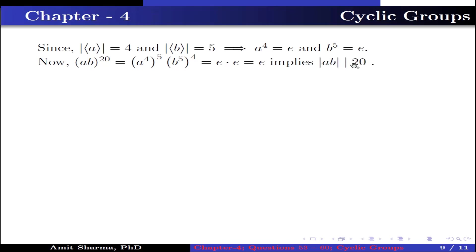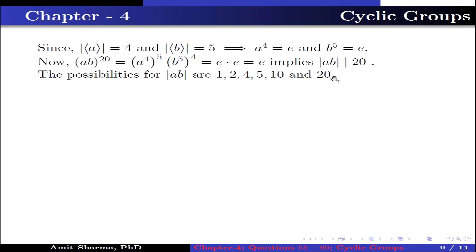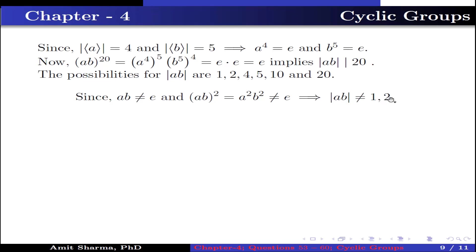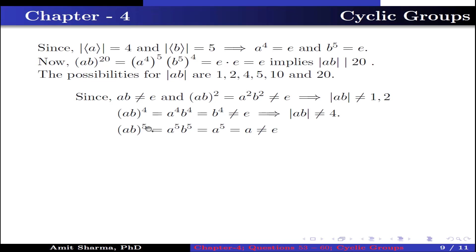This implies the order of AB divides 20. The possibilities for the order of AB are 1, 2, 4, 5, 10, and 20. Since AB ≠ identity and (AB)² = A²B² ≠ identity, the order of AB cannot be 1 or 2. (AB)⁴ = A⁴·B⁴ = B⁴ ≠ identity, so the order of AB cannot be 4. (AB)⁵ = A⁵·B⁵ = A⁵ = A⁴·A = A ≠ identity, so the order of AB cannot be 5.